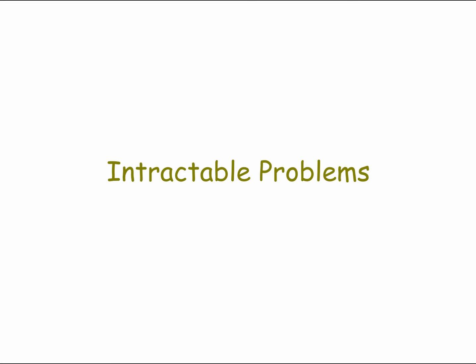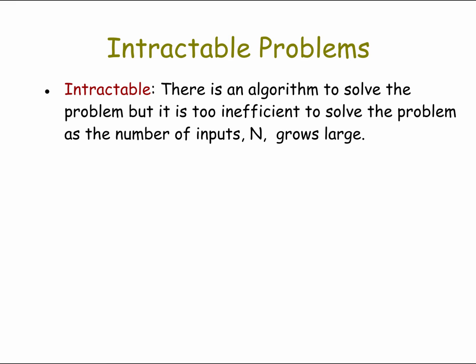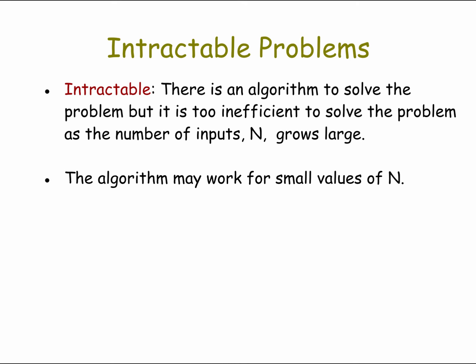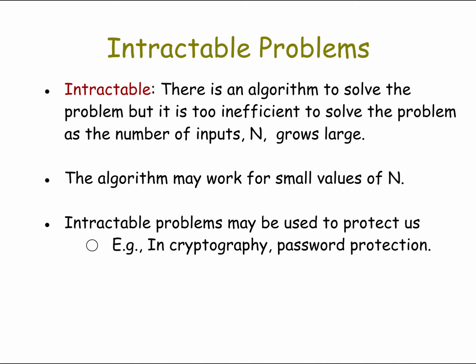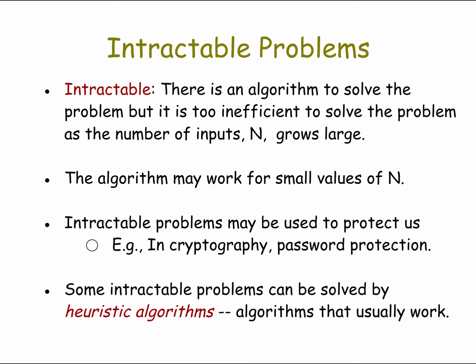Let's now talk about intractable problems. A problem is intractable if there's an algorithm to solve it, but the algorithm is too inefficient to solve it as the number of inputs grows large. We can solve intractable problems for small input sizes, but not in general for large input sizes. We can use this fact to protect us — for example, protecting our passwords. Also, for certain intractable problems, we can sometimes find heuristic algorithms — algorithms that work in many cases but are not guaranteed to work in all cases.